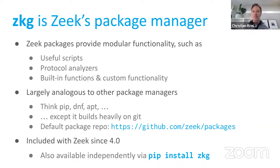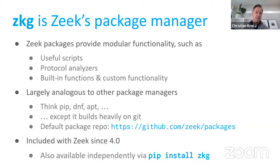Being built on git gives you nice properties around managing how you retrieve a package, selecting a particular version or branch. It is sometimes a little quirky when things go wrong because you're faced with git details that aren't immediately obvious. But most of the time users should barely notice. zkg has a default package repository — we call it a package source since 'repository' is so overloaded — and it's basically an index into other repositories on GitHub. The package manager has been shipped with Zeek since version 4.0, which simplified the workflow considerably.